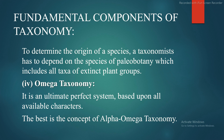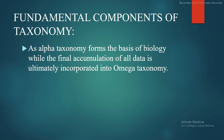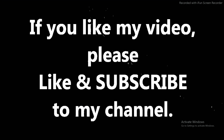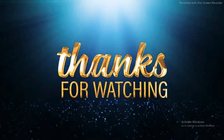To determine the origin of a species, a taxonomist has to depend on the species of paleobotany, which includes all the taxa of extinct species and extinct plant groups. Fourth is omega taxonomy — an ultimate perfect system based upon all available characters. The best concept is that of alpha–omega taxonomy: alpha taxonomy forms the basis of biology, while the final accumulation of all data is ultimately incorporated into omega taxonomy. If you like this video, please like and subscribe to the channel. Thanks for watching.